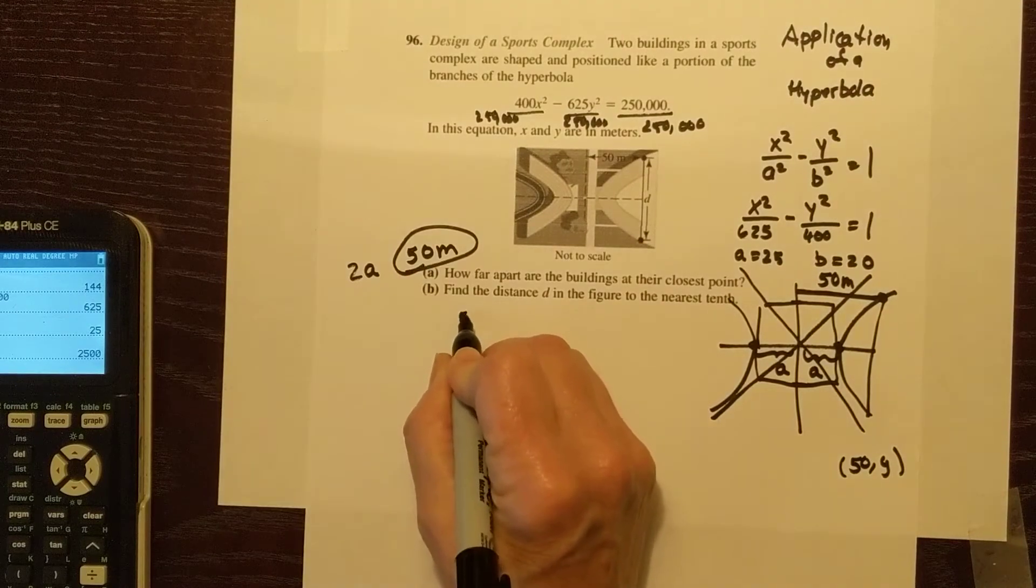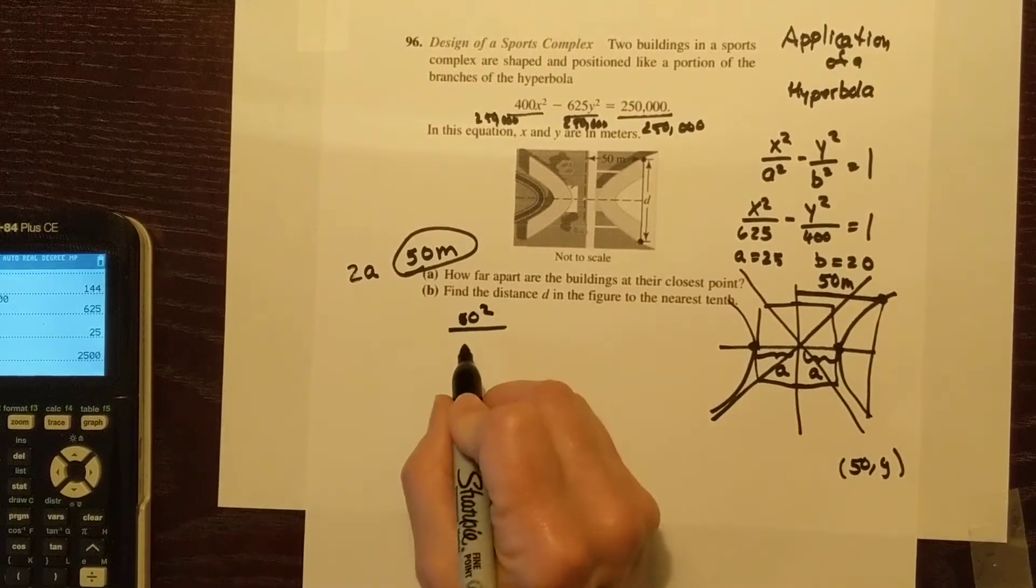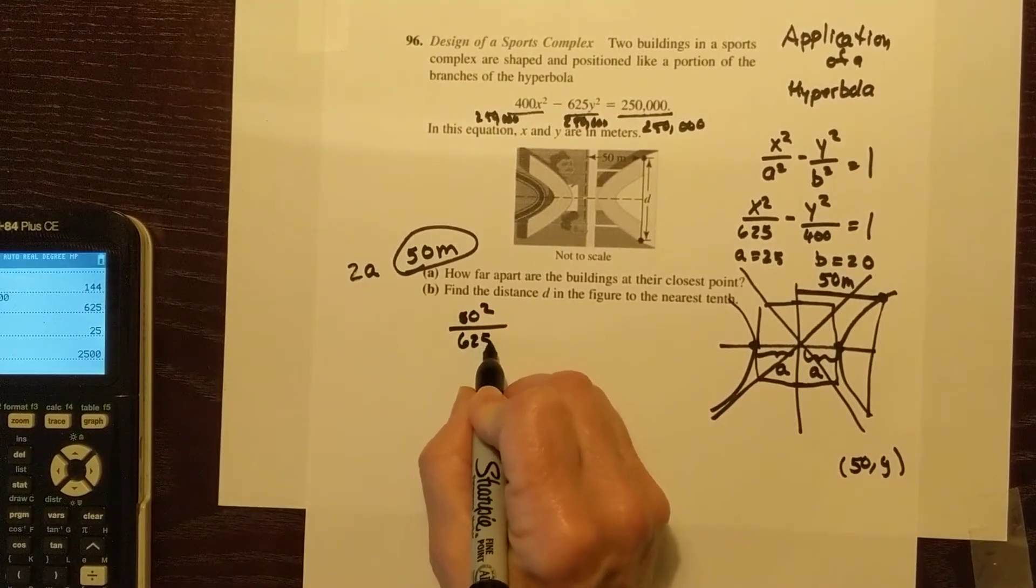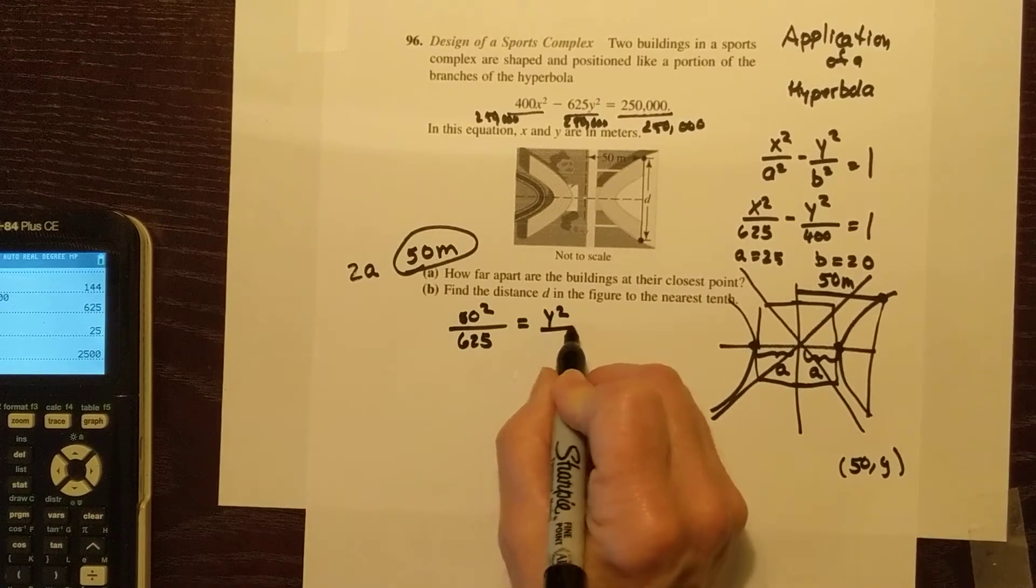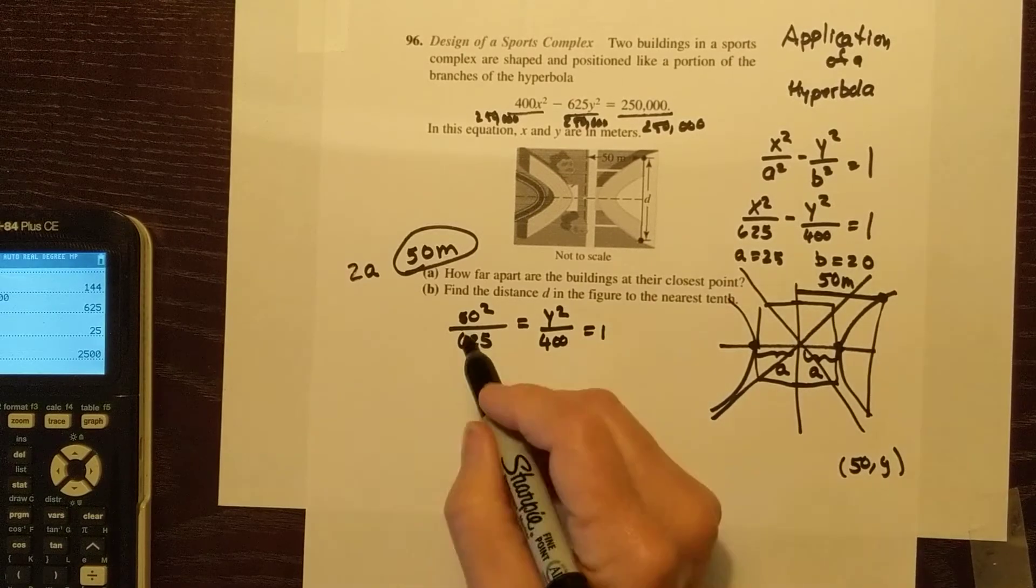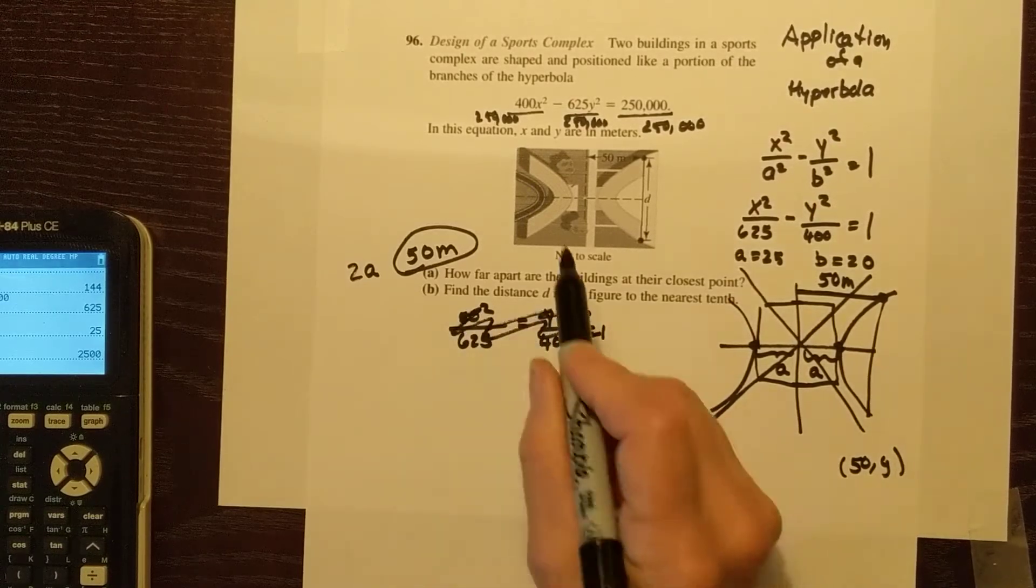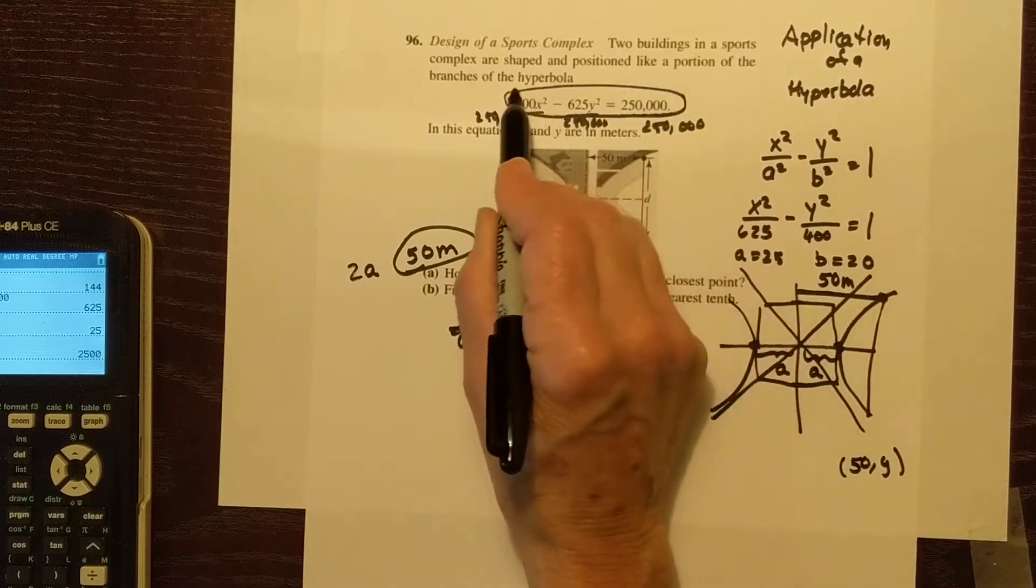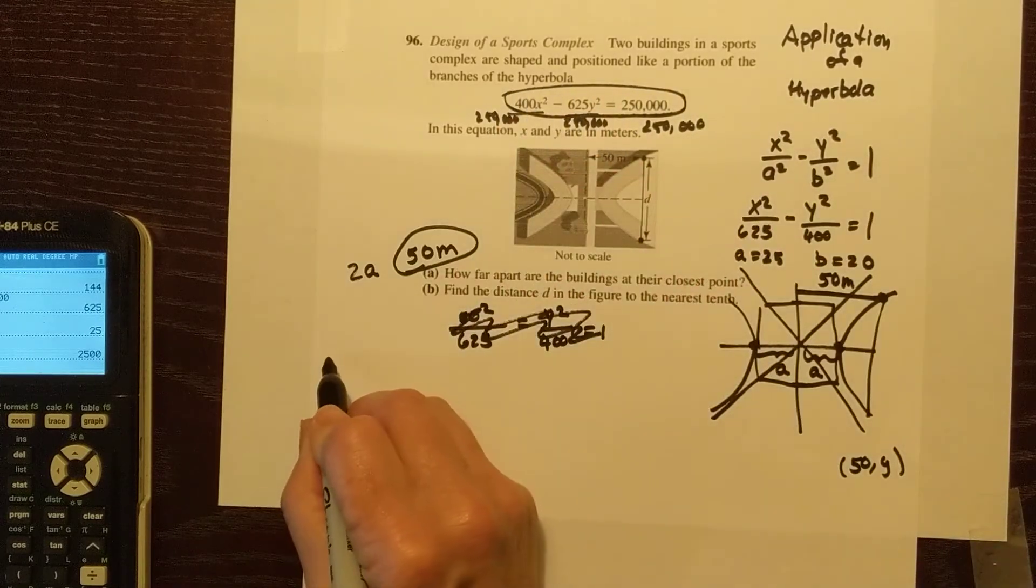Actually, I'm not going to do it that way. I'm going to use the equation they give me. That looks easier to plug into. So I'm going to say 400 times 50 squared minus 625 times y squared is 250,000.